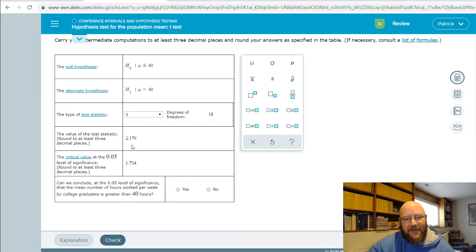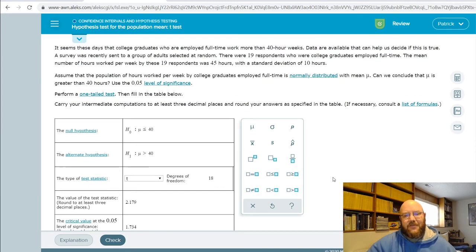But anyway, so since this crit value is less than this test statistic, so remember, with normal distribution, set our mean to zero. Our critical value is 1.734, but our t-stat is out here at 2.179. So this guy is greater than our critical value, so yes, we can actually say that these are fundamentally different.